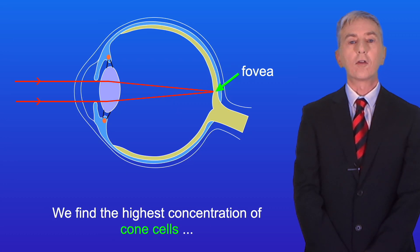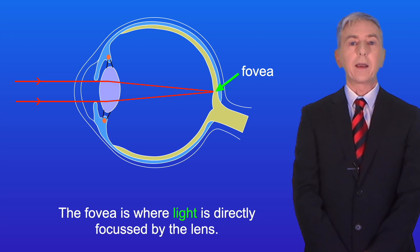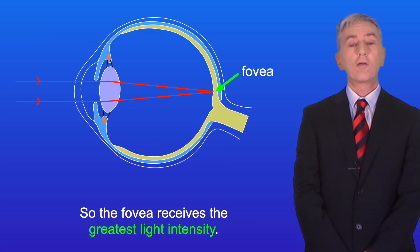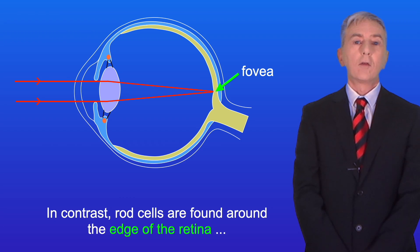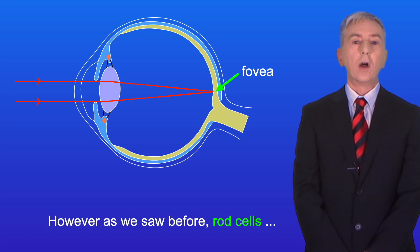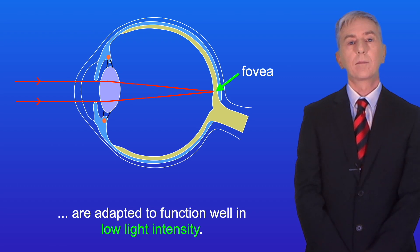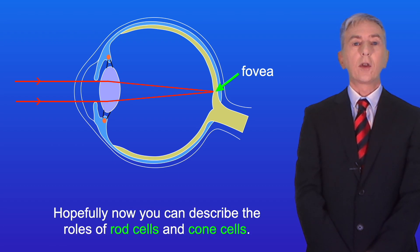We find the highest concentration of cone cells in the part of the retina called the fovea. The fovea is where light is directly focused by the lens, so it receives the greatest light intensity. In contrast, rod cells are found around the edge of the retina, where light intensity is lower. However, as we saw before, rod cells are adapted to function well in low light intensity. So hopefully now you can describe the roles of rod cells and cone cells.